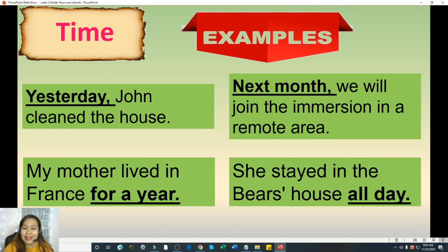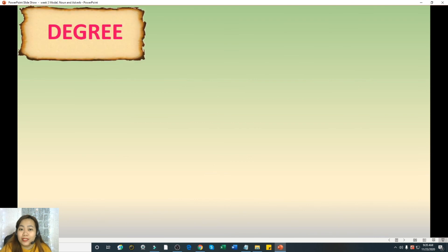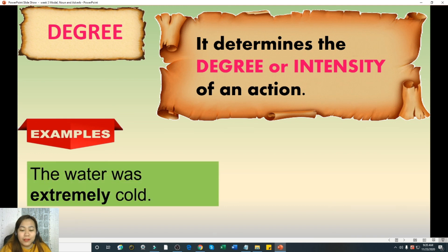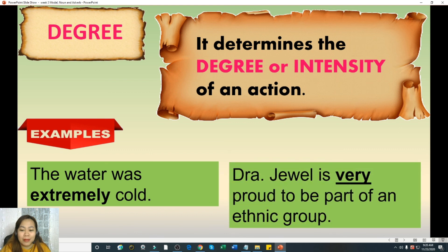Our last type of adverb is degree. It determines the degree or intensity of an action. Examples, the water was extremely cold. Second example, Dr. Joel is very proud to be part of an ethnic group. Our adverbs of degree in these sentences are extremely and very. So it determines the degree or intensity of an action.